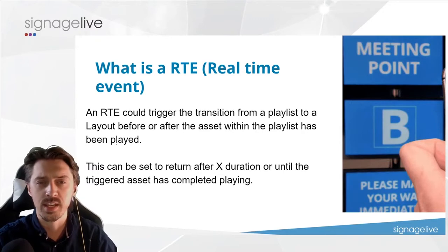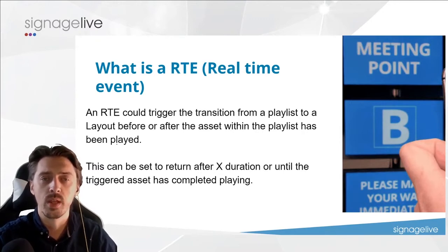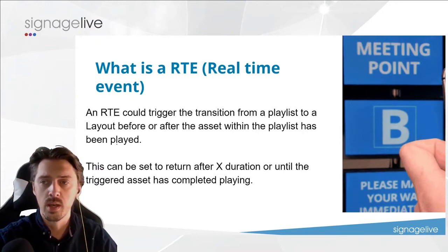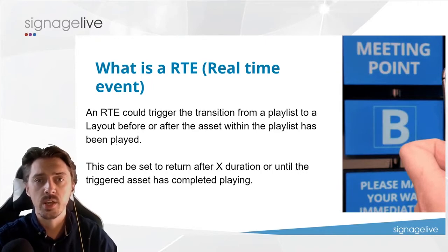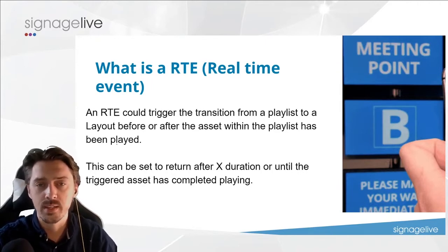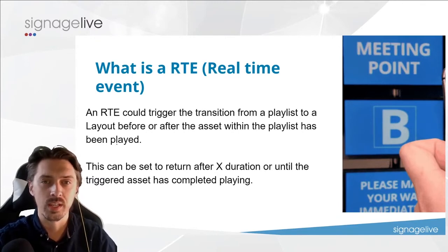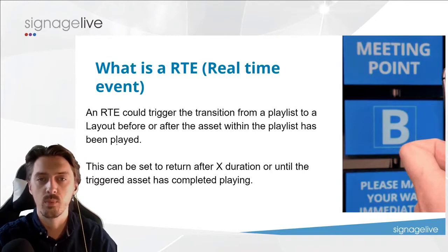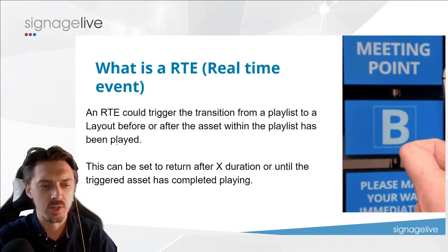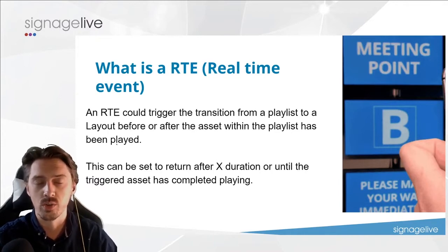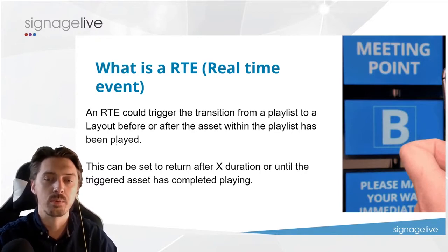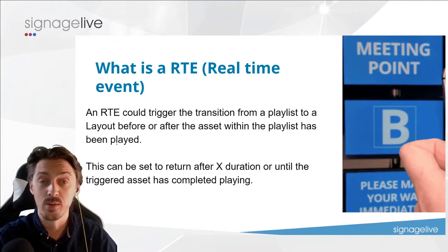RTEs also give you the ability to send commands outward. For example, if you wanted a particular asset playing on screen to light up a room in a color matching that advertisement, the RTE ability does this via HTTP or serial. When that asset displays, it triggers that real-time event. So this is a slightly different version of triggering — we're not changing content within Signage Live, we're potentially speaking outward to other devices when content is displayed from Signage Live.